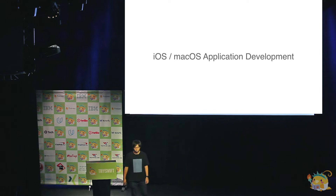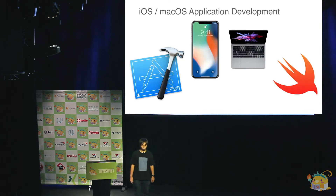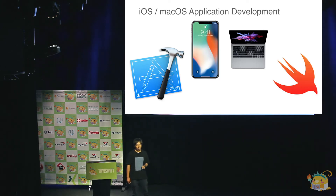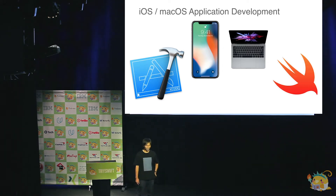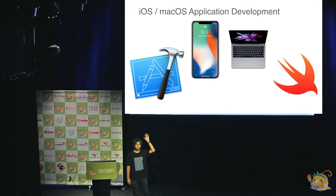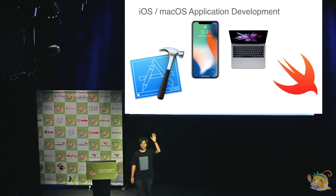Let's start with iOS and macOS app development. As an iOS or macOS engineer, we use three or four elements to develop. The first is Xcode — as yesterday's talk, I know all of you love Xcode, right? The second is, of course, iOS or macOS. And the last one is Swift, which we love. Who loves Swift? Who likes Objective-C? Cool.